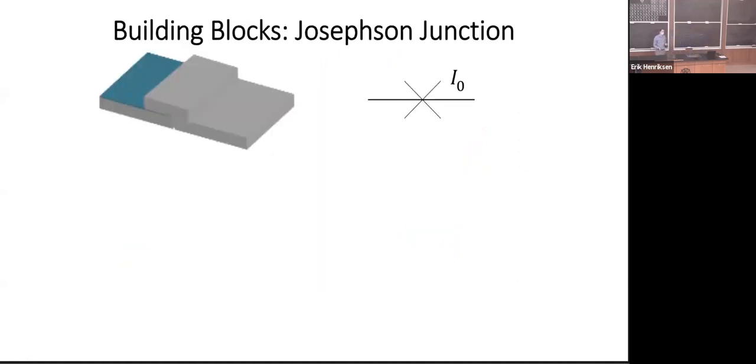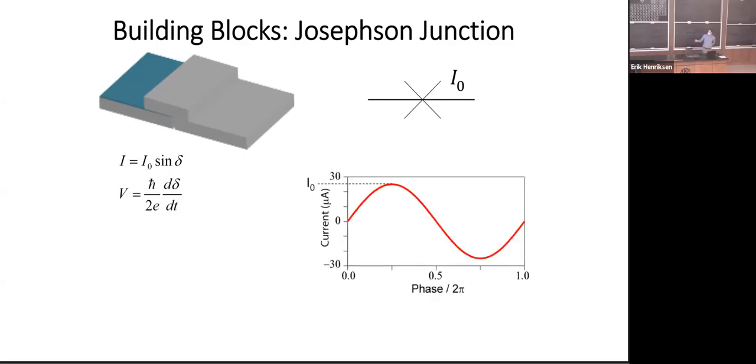Our next building block that we need is what's called a Josephson junction. This is really just a superconductor interrupted by some sort of weak link. Typically, that weak link is basically a layer of insulator sandwiched between two superconductors. So we've got like a superconductor, another superconductor, an insulator in between. Current can tunnel across the insulator with no voltage, no dissipation. It's represented by the circuit symbol here, and it's characterized by a critical current, I0. It turns out that the current going through a junction is related to this critical current times sine delta, where delta is the phase of the superconducting order parameter across the junction. And basically, it's the phase difference of the wave function from one side to the other.